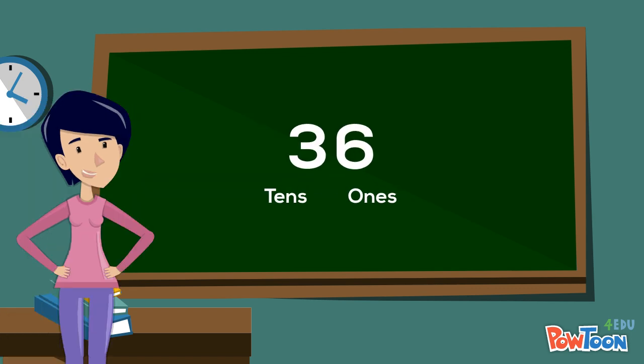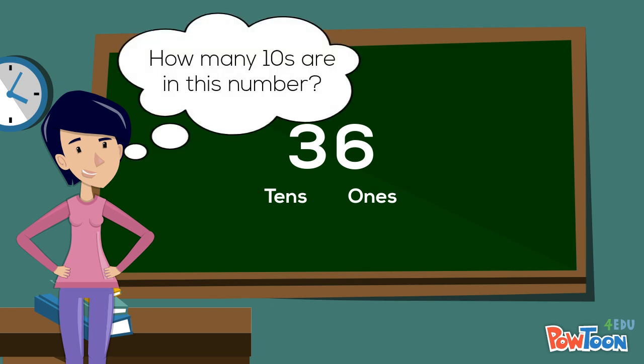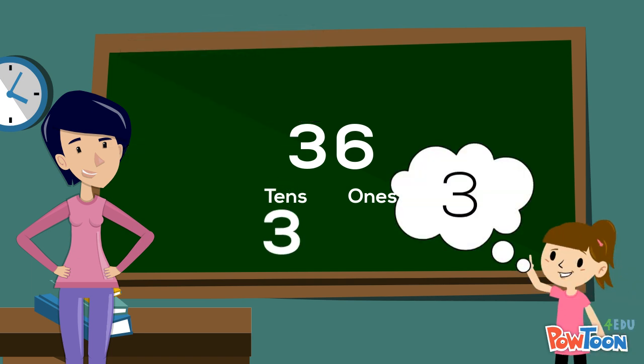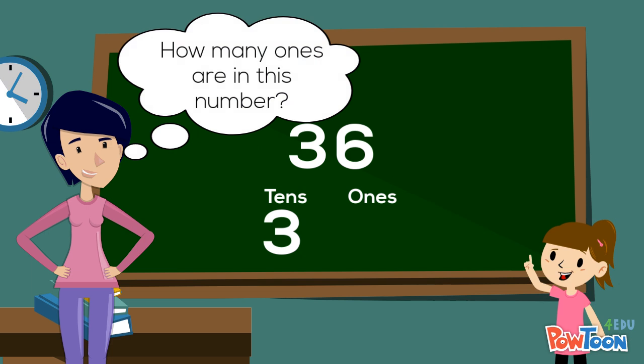Let's view how we model two-digit numbers using place value blocks. How many tens are in this number? Three. How many ones are in this number? Six.